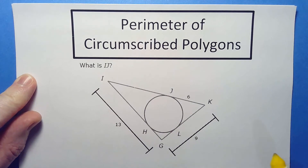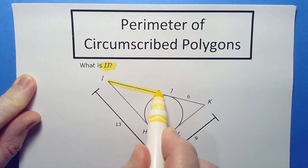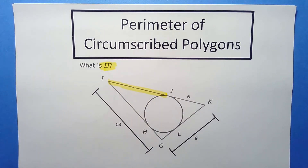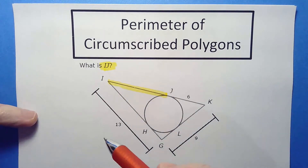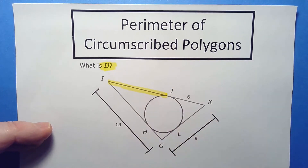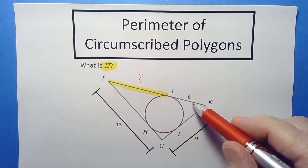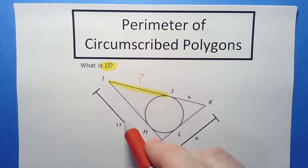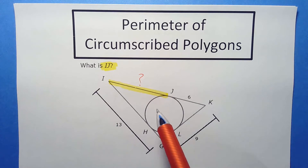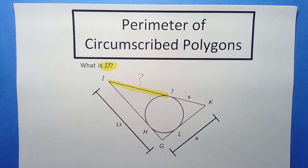Here's a typical problem. We're trying to find IJ, which is this segment basically from where the tip is to right where it touches the circle. We know some lengths here, but I need a little more relationship understanding. I'm not sure what equals what, so it looks like we need a new theorem.